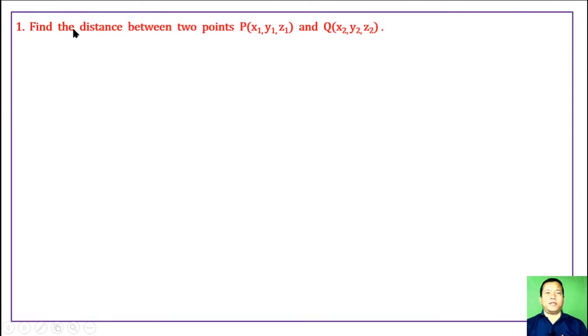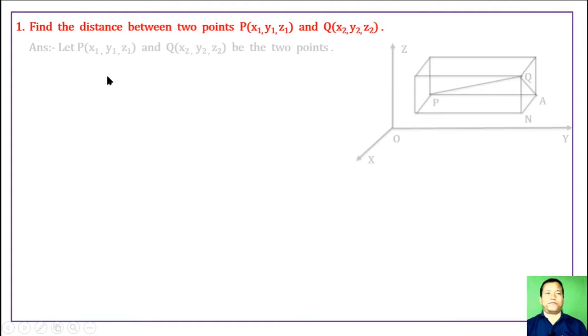Find the distance between two points P, whose coordinates are (x1, y1, z1), and Q, whose coordinates are (x2, y2, z2).